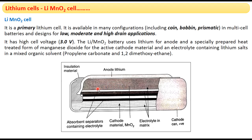You can see in the picture the diagram showing the parts and composition of the lithium MnO₂ cell. Metallic lithium acts as the anode. There is an insulator which separates the cathode from the anode. The cathode is preheated manganese dioxide. There is an electrolyte matrix, a cathode outer layer which is the positive electrode, and absorbent separators in the middle. This is the construction of the lithium MnO₂ cell.